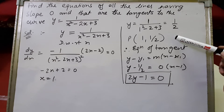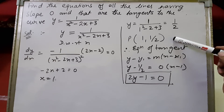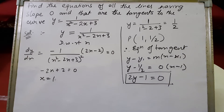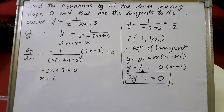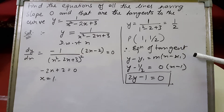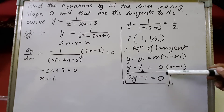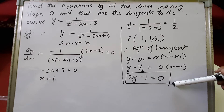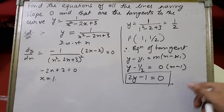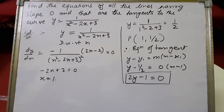The point at which the tangent is drawn with slope 0 is (1, 1/2). Using the formula y minus y1 equals m times (x minus x1), with m equals 0, x1 equals 1, and y1 equals 1/2, we substitute to get y minus 1/2 equals 0 times (x minus 1), so that term becomes 0. Taking the LCM and cross multiplying gives the equation of the tangent as 2y minus 1 equals 0. This is the required equation of the tangent.